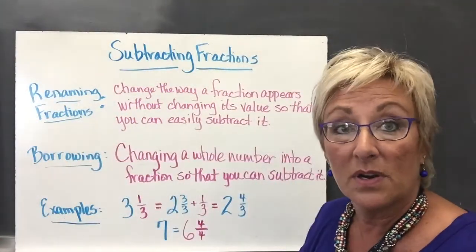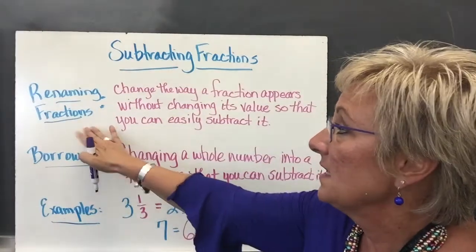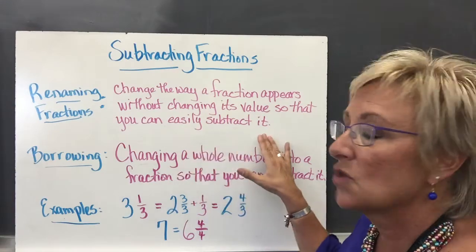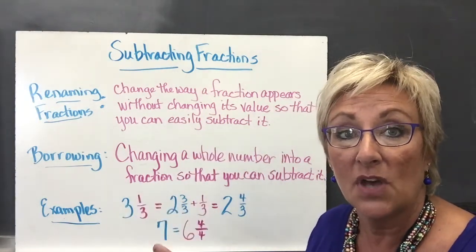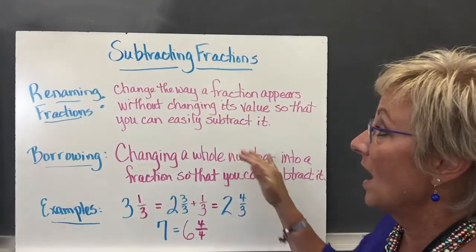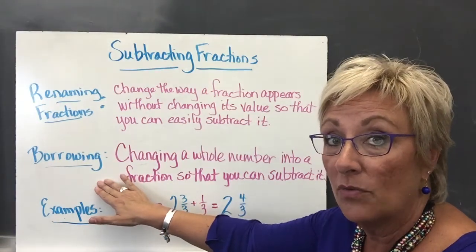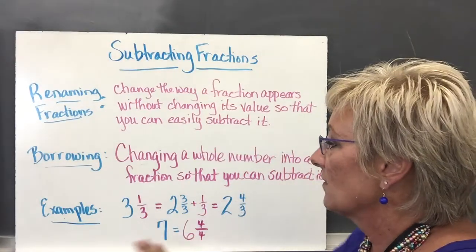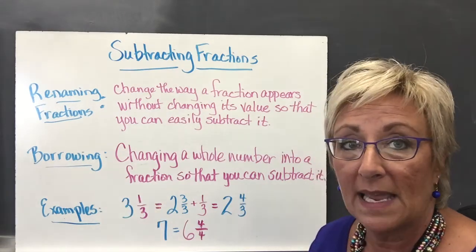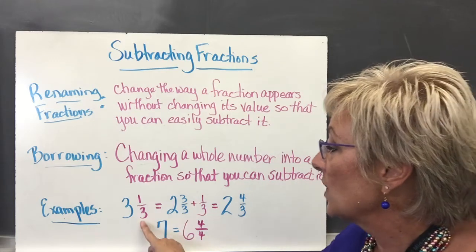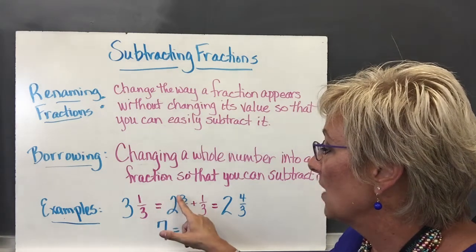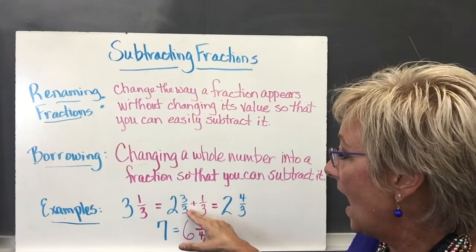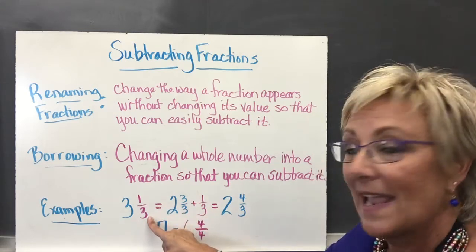This is where it gets a little tricky — we're going to start subtracting fractions. The first thing to know is renaming a fraction: you change the way a fraction appears without changing its value so you can easily subtract it, just like we changed fractions to add them. For example, if I have 3 and 1/3, and 3 is the common denominator, I can rewrite 3 as 2 and 3/3, because 3/3 equals 1, and 1 plus 2 gives me 3. So I've just rewritten it so I can now add the 1/3 to it.